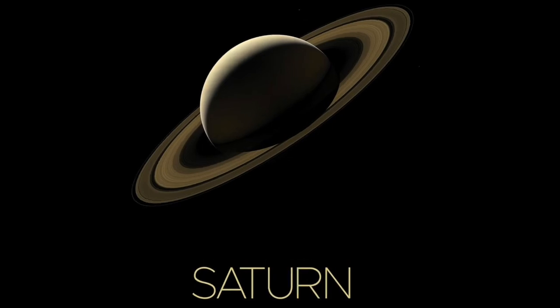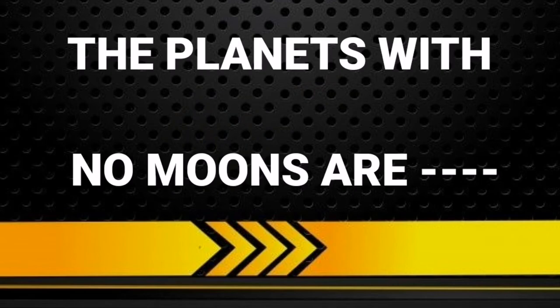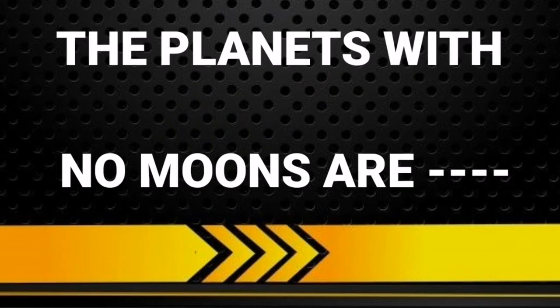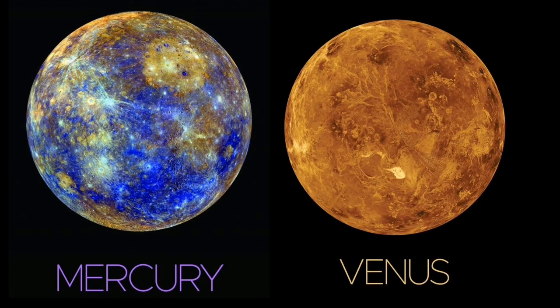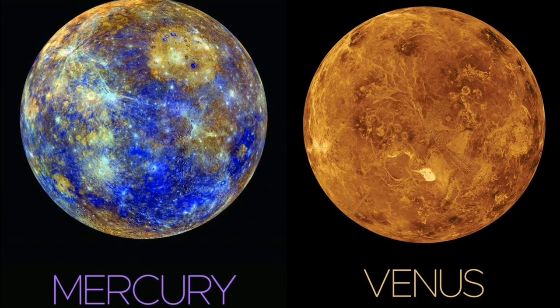Next question. The planets with no moons. Moons illathath planets edha kya anu? Answer: Mercury and Venus. Mercury-yum Venus-inum maana moons illatha.